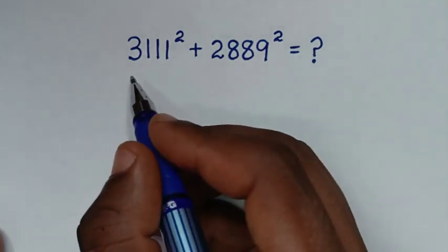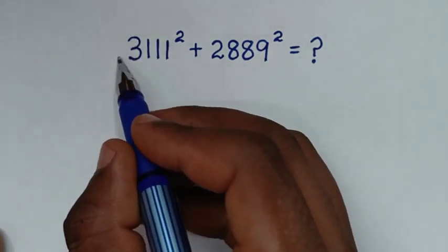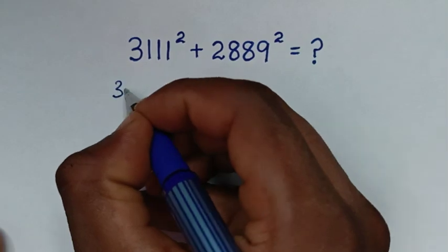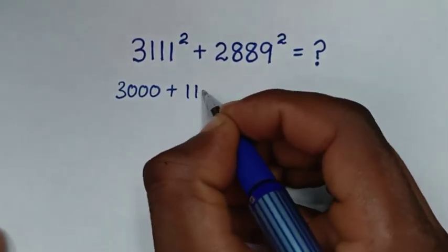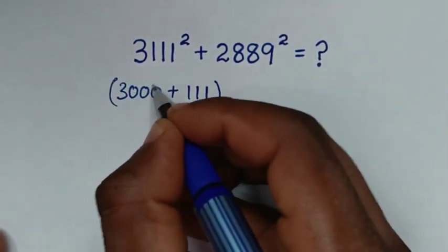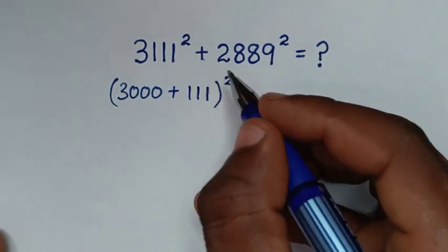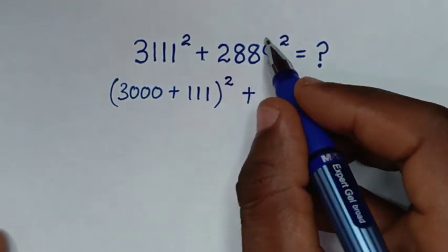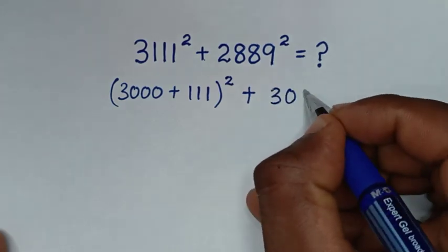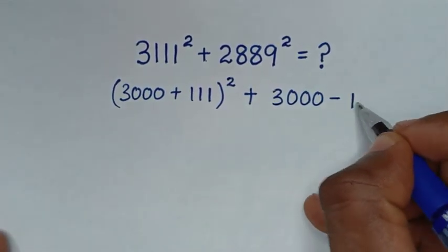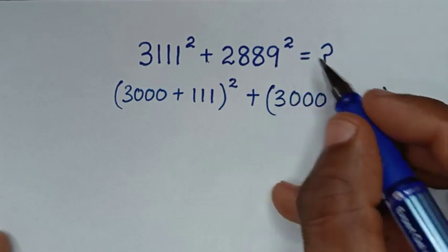In the first step, from this 3,111, this is the same as (3,000 plus 111) bracket squared, then plus 2,889, which is the same as (3,000 minus 111) bracket squared.